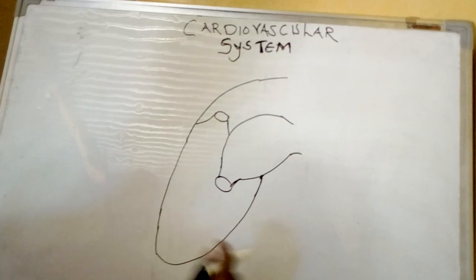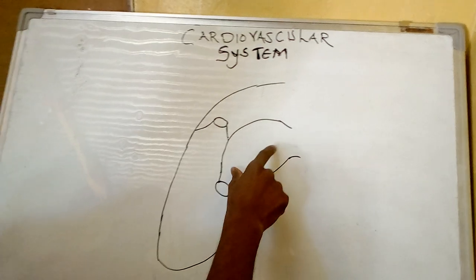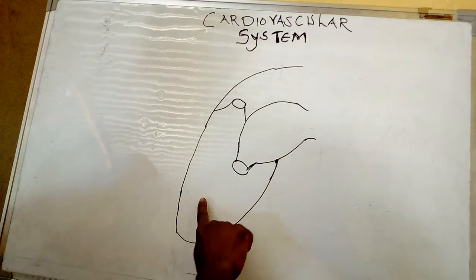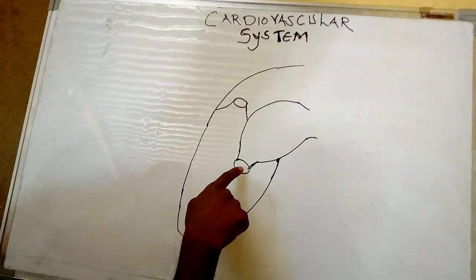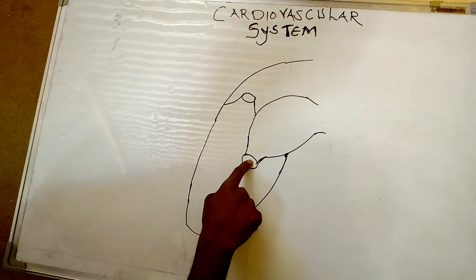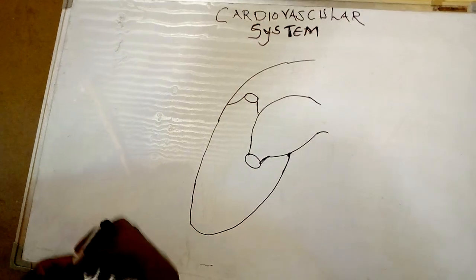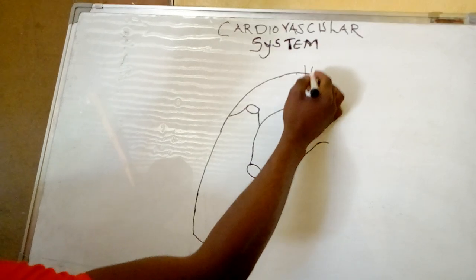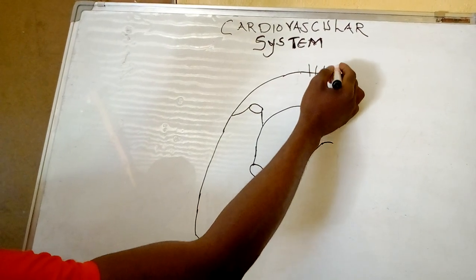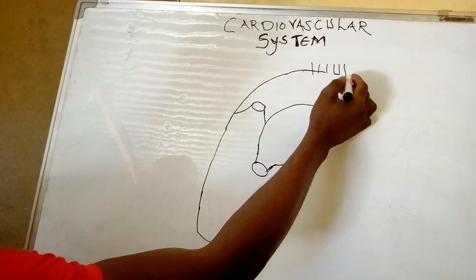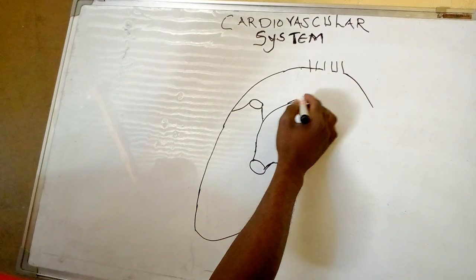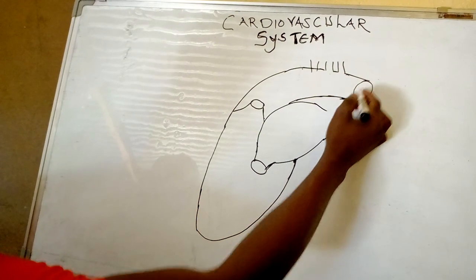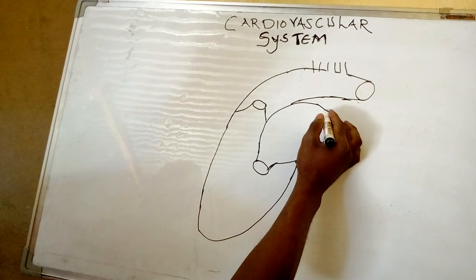So these chambers initially have doors. If we assume to say this is a house, this is a room and this is also a room. Before you go from this room to the other, we are going to have a door. So this is the left side of the heart with its two chambers and their respective doors.